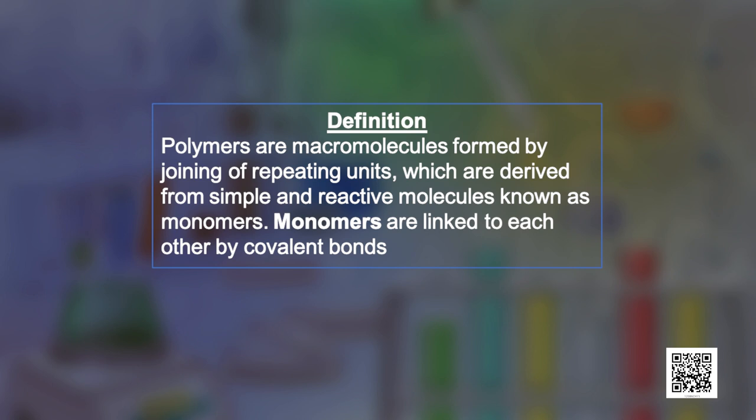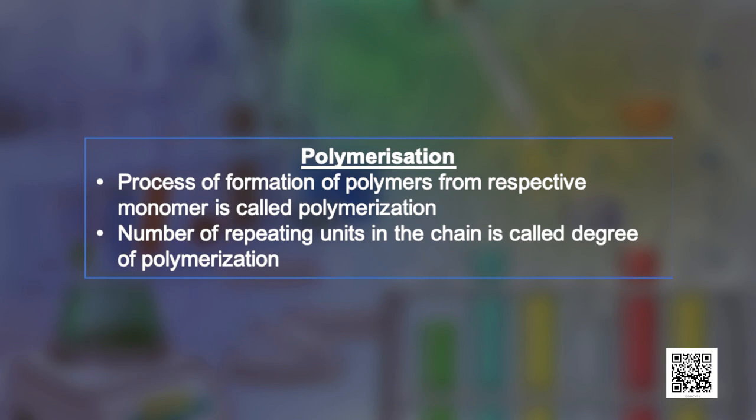Monomers are linked to each other by covalent bonds. The process of formation of polymers from respective monomers is called polymerization. The number of repeating units in the chain is called the degree of polymerization.